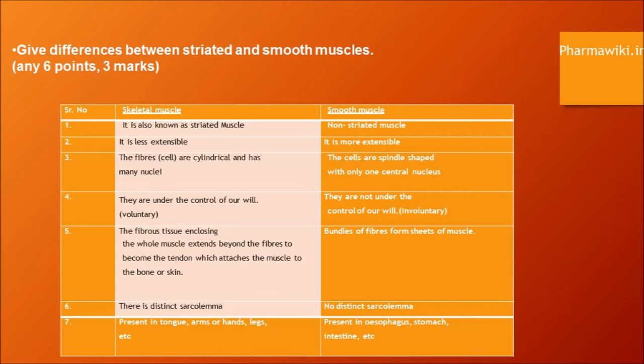For smooth muscles, bundles of fibers form sheets of muscle. Skeletal muscle has a distinct sarcolemma, while smooth muscle does not. Skeletal muscles are present in the tongue, arms, hands, and legs. Smooth muscles are present in the esophagus, stomach, and intestine.